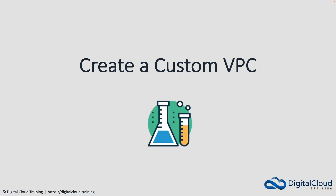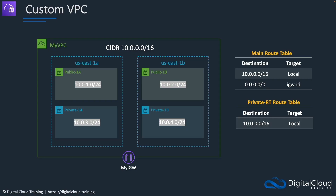Hey guys, welcome to this lesson. In this lesson we're going to create our own custom VPC. This will be the configuration that we create. We're going to create a VPC called myVPC with a specific CIDR block, using two availability zones in the US East region: 1A and 1B.